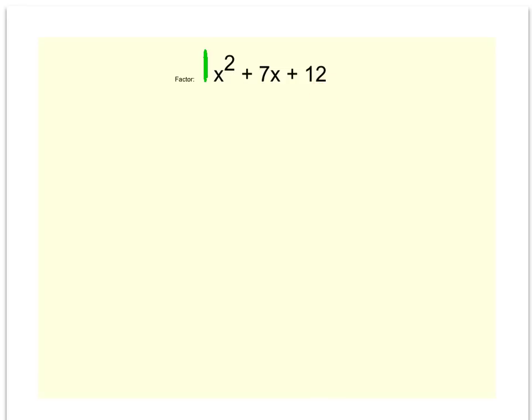So what I'd like to do is ask myself what multiplies to give me 12 and adds to give me 7. Let's make a list of things that multiply to give me 12. I've got 12 and 1, 6 and 2, 4 and 3. Do any of them work to add to give me 7? I don't think there's any way that those could add or subtract to give me 7. But if I have a positive 4 and a positive 3, those will add to give me 7 and multiply to give me 12.